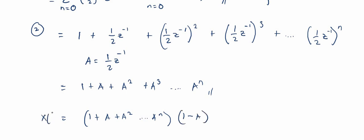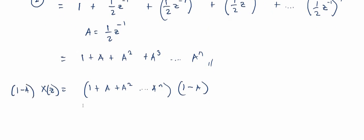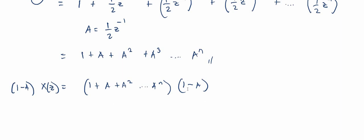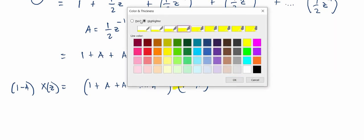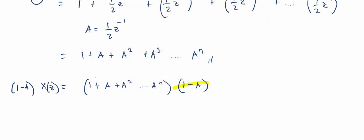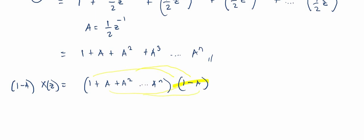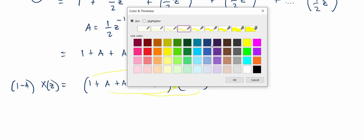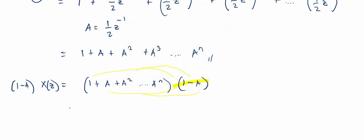This expression is X(z). Since we multiply it by (1 - a), we also apply that to the other side. This is an important step because multiplying by (1 - a) will further simplify our equation. Multiplying through: one times one gives one.